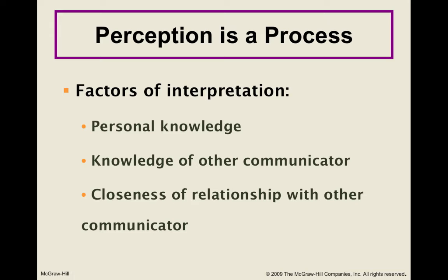Another thing that can play into your interpretation is your knowledge of that person — what other experiences you've had with this particular person can help you come to a conclusion. And finally, your relationship with that person — how close you are to them — will help you establish meaning. Now, the perception process is not always linear. It doesn't necessarily go specifically from one step to the next. It happens so fast and instantaneously that we don't even really stop to think about it.